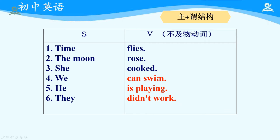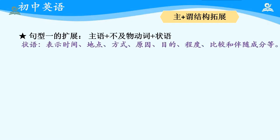请注意后三句话，谓语动词分别和情态动词、被动词以及助动词进行搭配，这样的结构我们称之为复合谓语，仍然是最简单的主谓结构。主谓结构可以进行进一步的拓展，例如主语加不及物动词加状语，状语表示时间、地点、方式、原因、目的、程度、比较和伴随成分等。